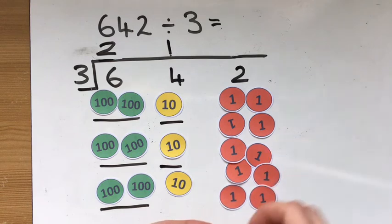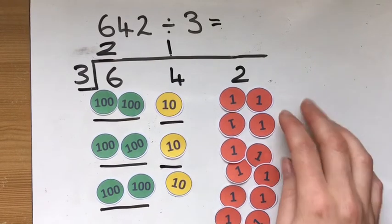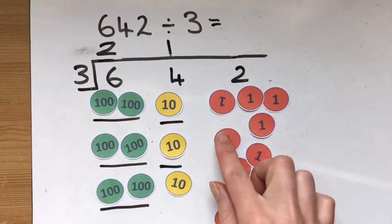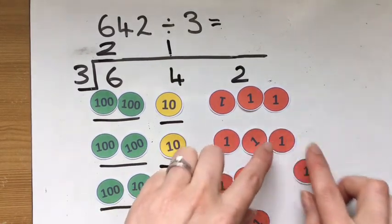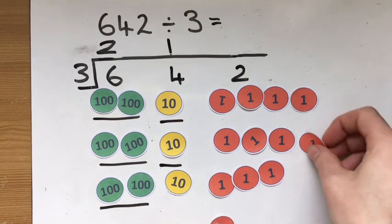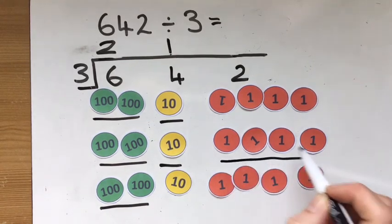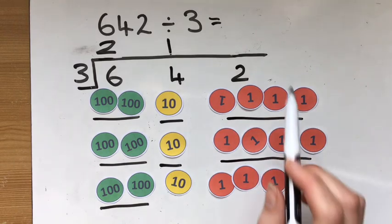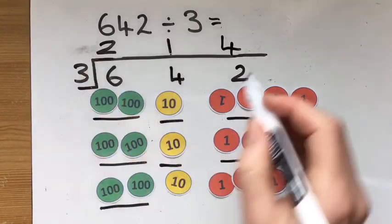So now we've got 12 in this column, just like before, and we're looking to see equal groups. Now if you're confident with your counting in threes, you should be able to spot this quite quickly. There we go. If we're getting three equal groups here, there's a group at the top here, one in the middle and one at the bottom, and there's four in each group. Now you can see we've got the same answer, 214.